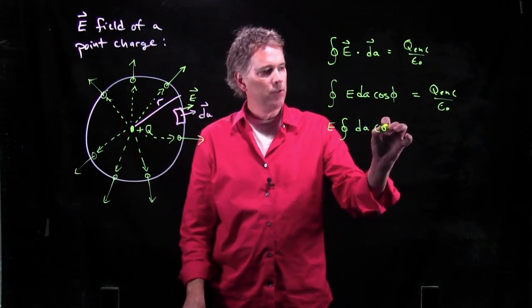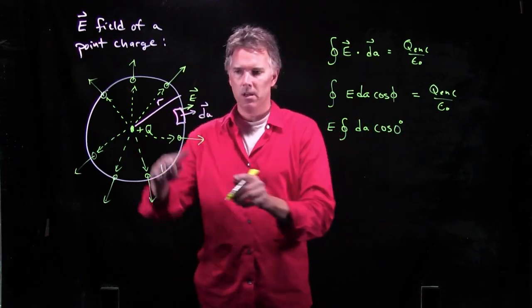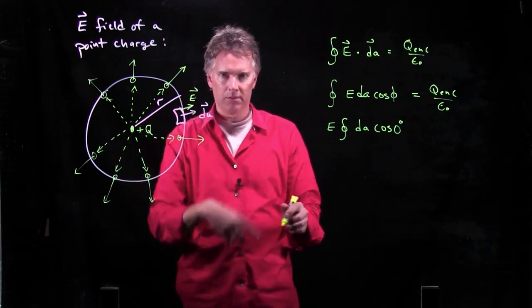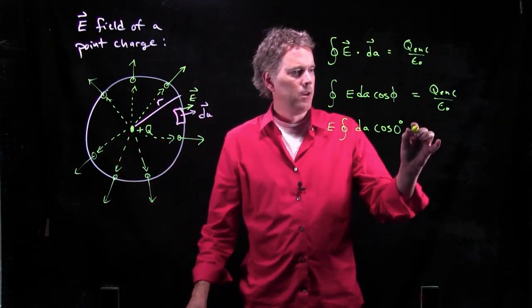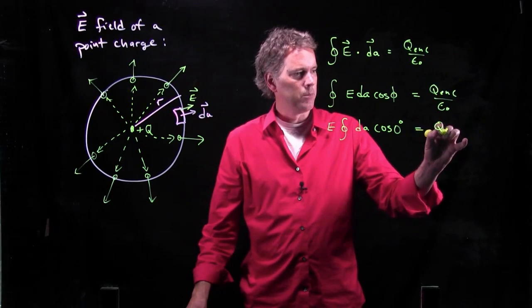We also said that phi is the angle between E and dA. And that is 0 degrees, right? E is this way. dA is the same way. They're parallel. All right, this is looking good. It's going to simplify quite a bit.